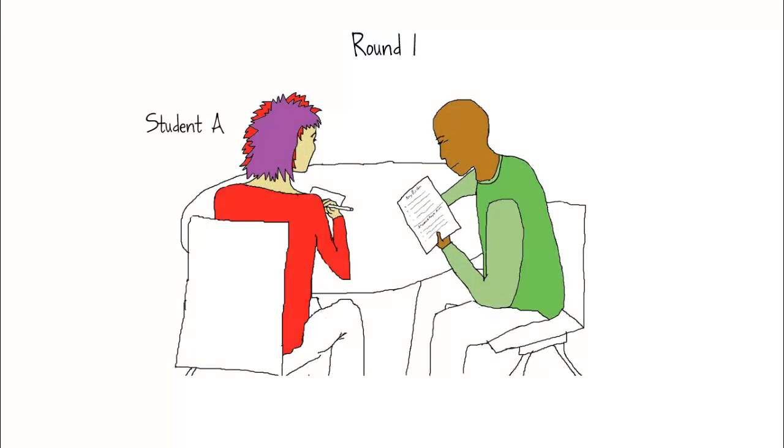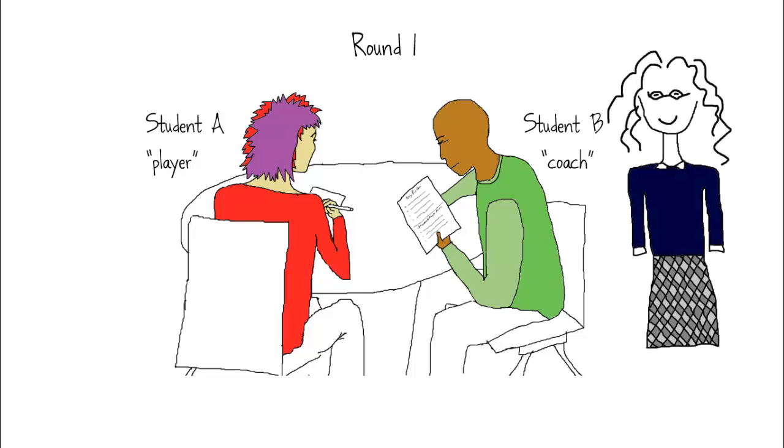In the first round, Student A is the player. She works through the problems. When student A has problems, you help the coach, student B, not the player.